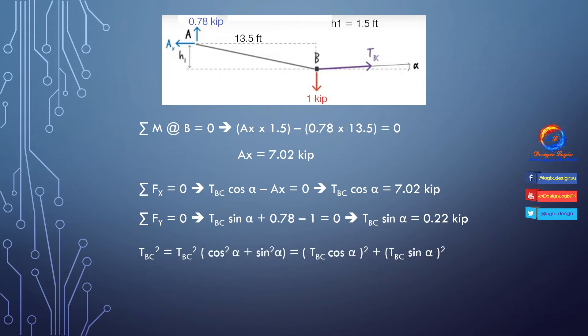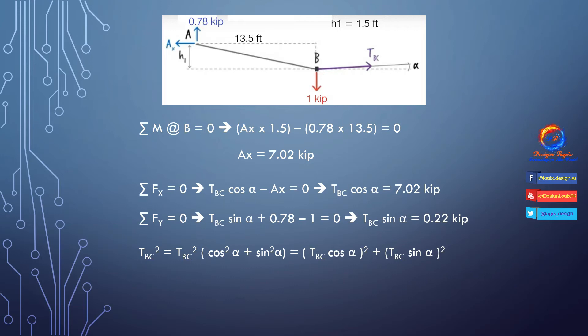Taking the square of TBC, we can write TBC² = (TBC × cos(alpha))² + (TBC × sin(alpha))², using the identity cos²(alpha) + sin²(alpha) = 1. Substituting the values of TBC × cos(alpha) and TBC × sin(alpha) gives TBC = 7.02 kips.